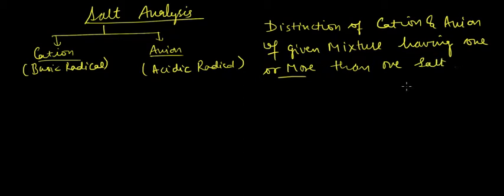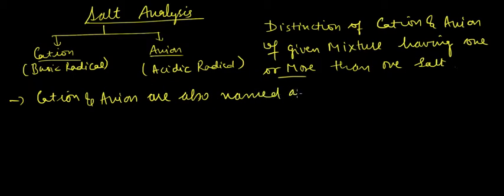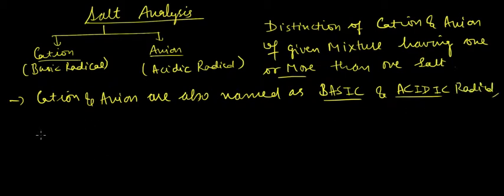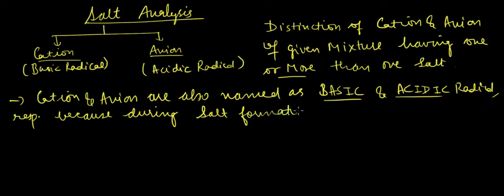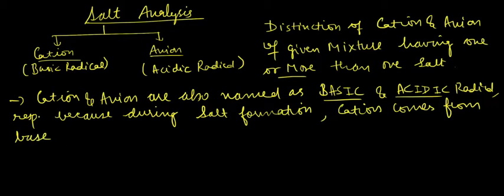Cation and anion are also named as basic and acidic radical respectively, because during salt formation cation comes from base and anion comes from acid.